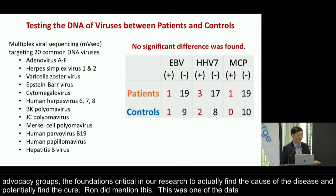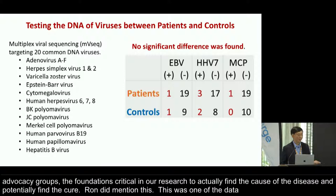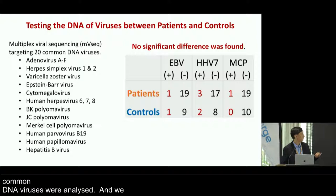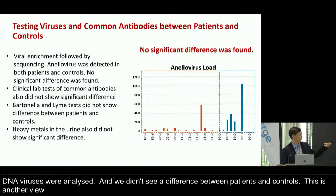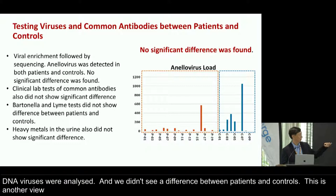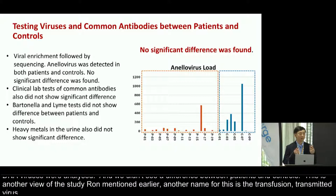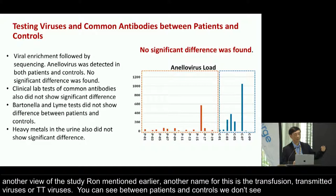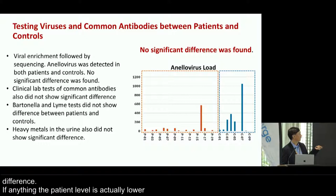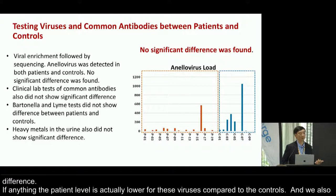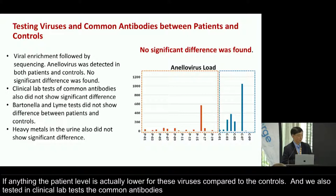One of the datasets in this study looked at common DNA viruses — we did not see a difference between patients and controls. In the viral enrichment study, the Anellovirus, also known as transfusion-transmitted virus or TTV, showed no significant difference between patients and controls. If anything, the patient level is actually lower for this virus compared to controls. Clinical lab tests for common antibodies, Bartonella, and Lyme tests also showed no significant difference.